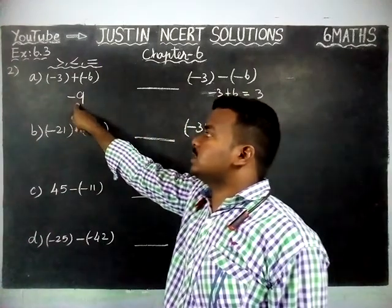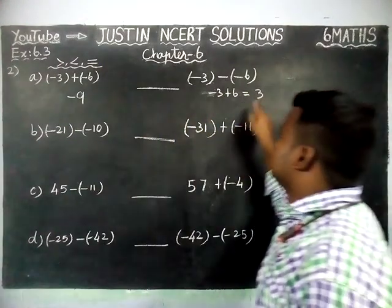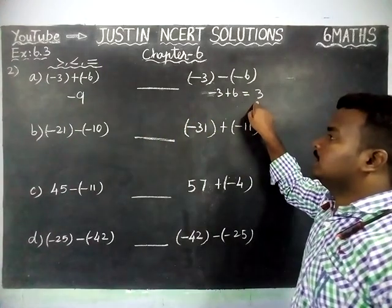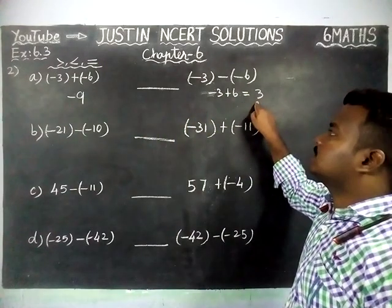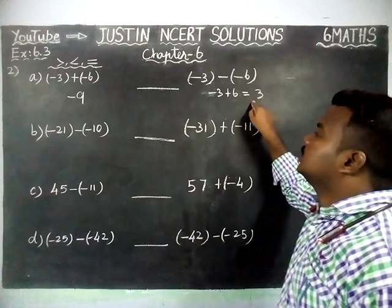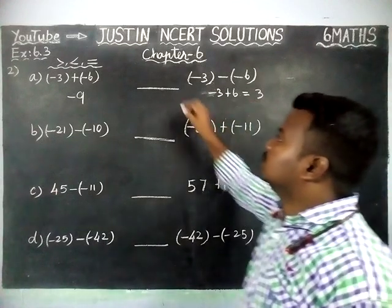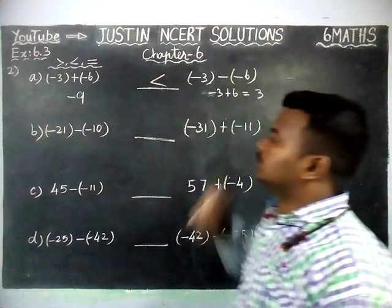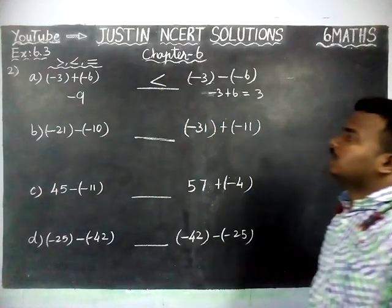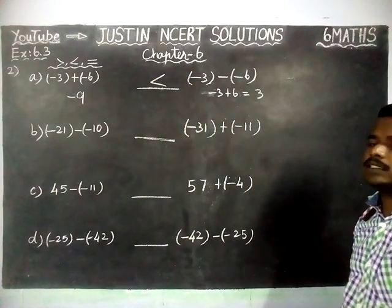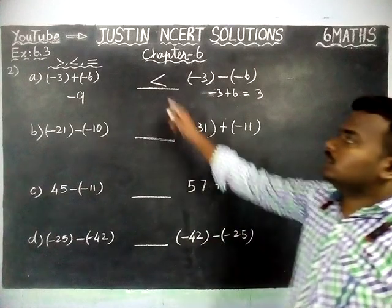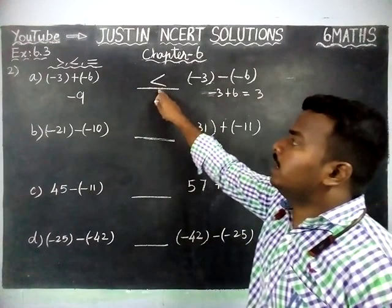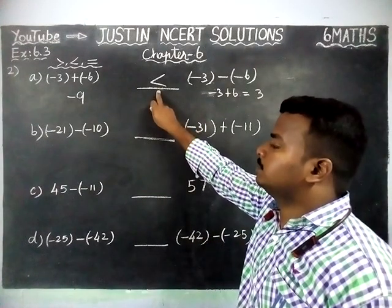Now, left hand side we have minus 9, right hand side we have 3. Since the positive number is the greatest number, we use the less than symbol. So, in the first blank, we have to use the less than symbol.